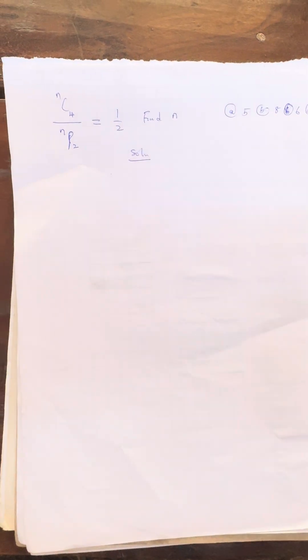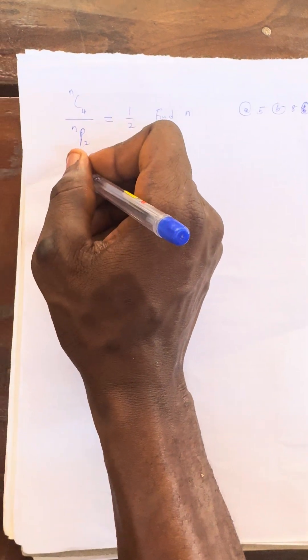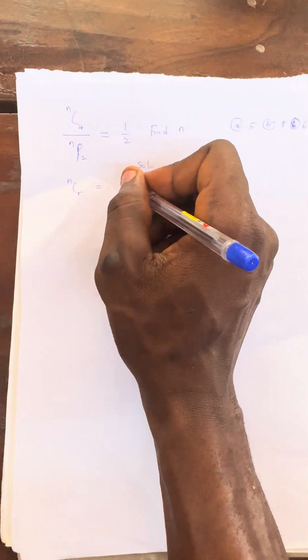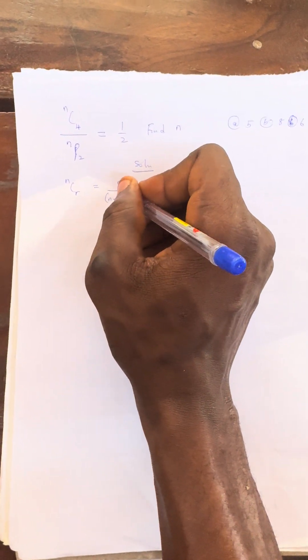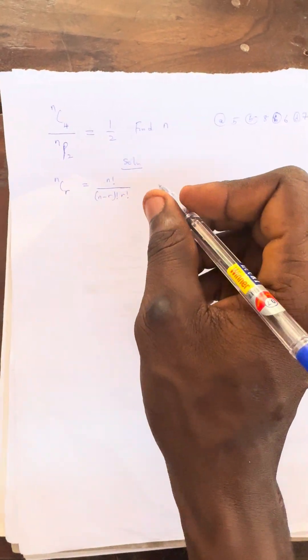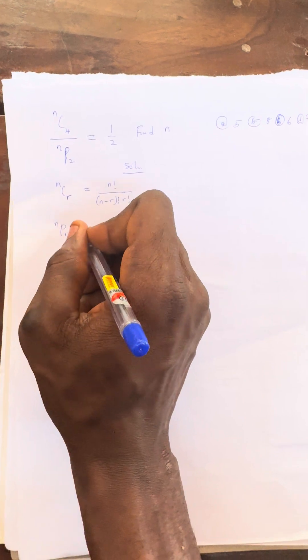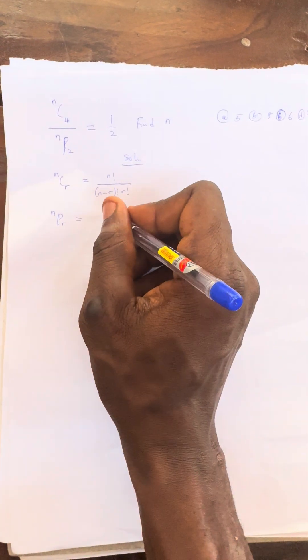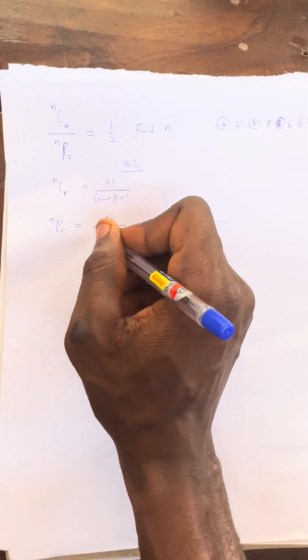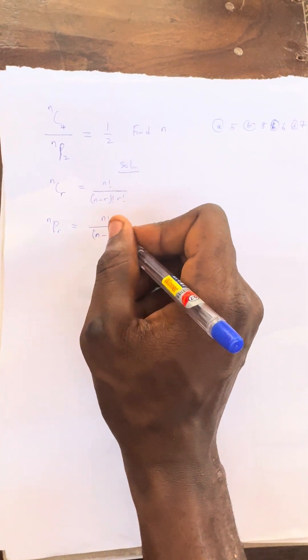See this type of question — we want to solve this. The formula for combination is: whenever you have n combination r, the formula will be n factorial over (n minus r) factorial r factorial. And whenever you have n permutation r, n permutation r will be n factorial over (n minus r) factorial.